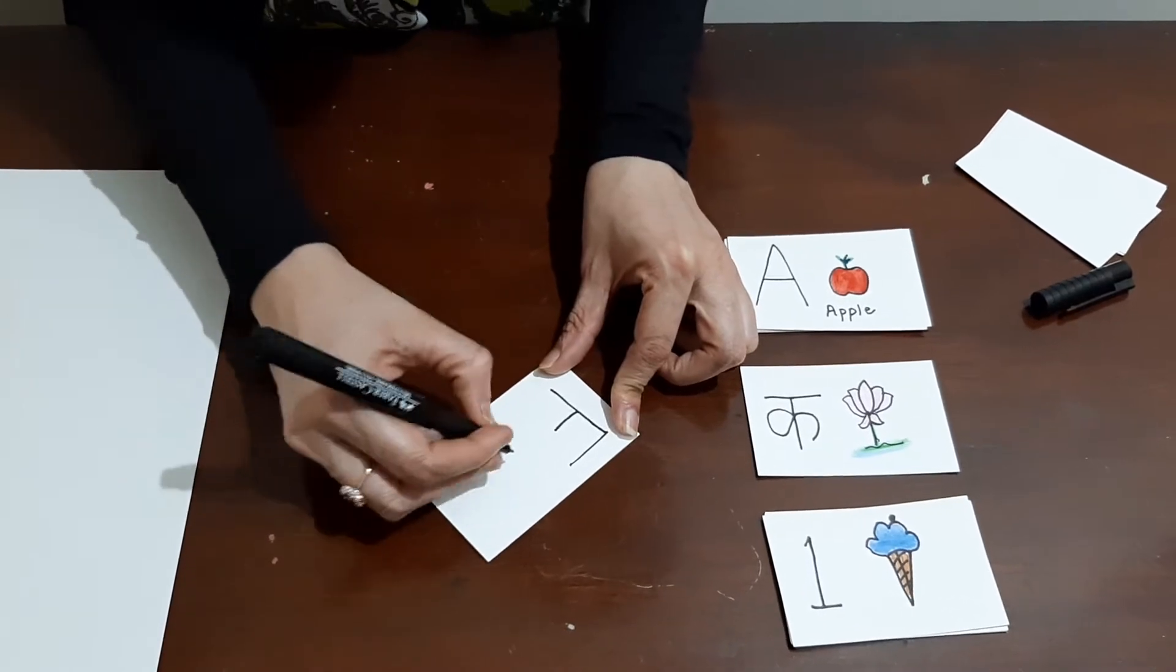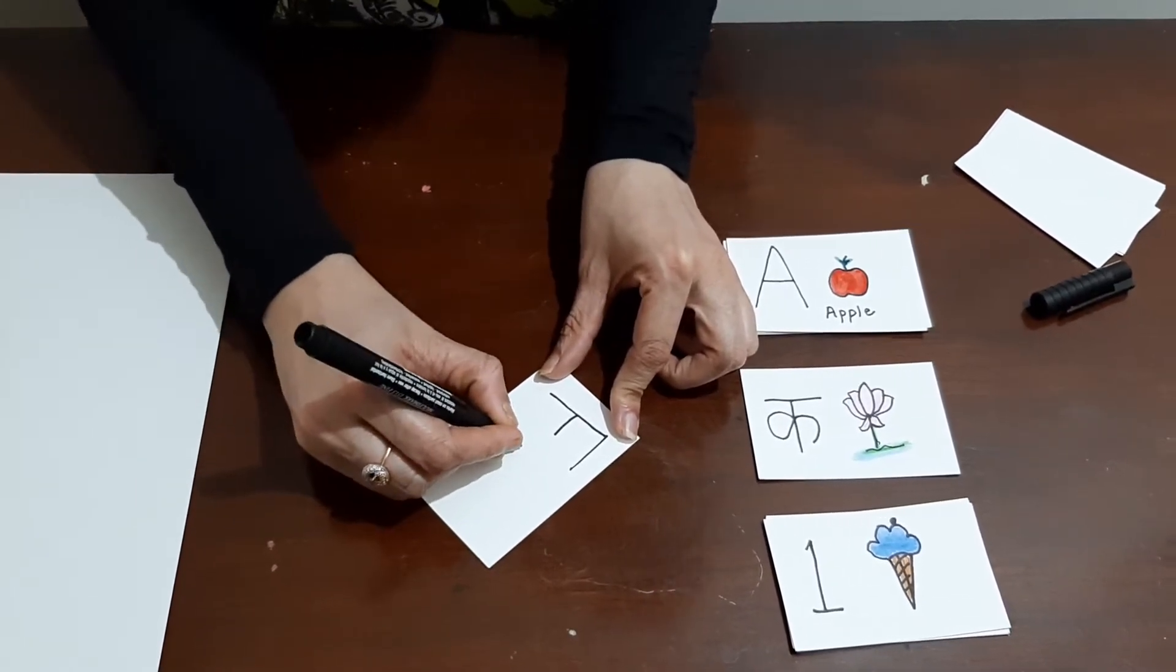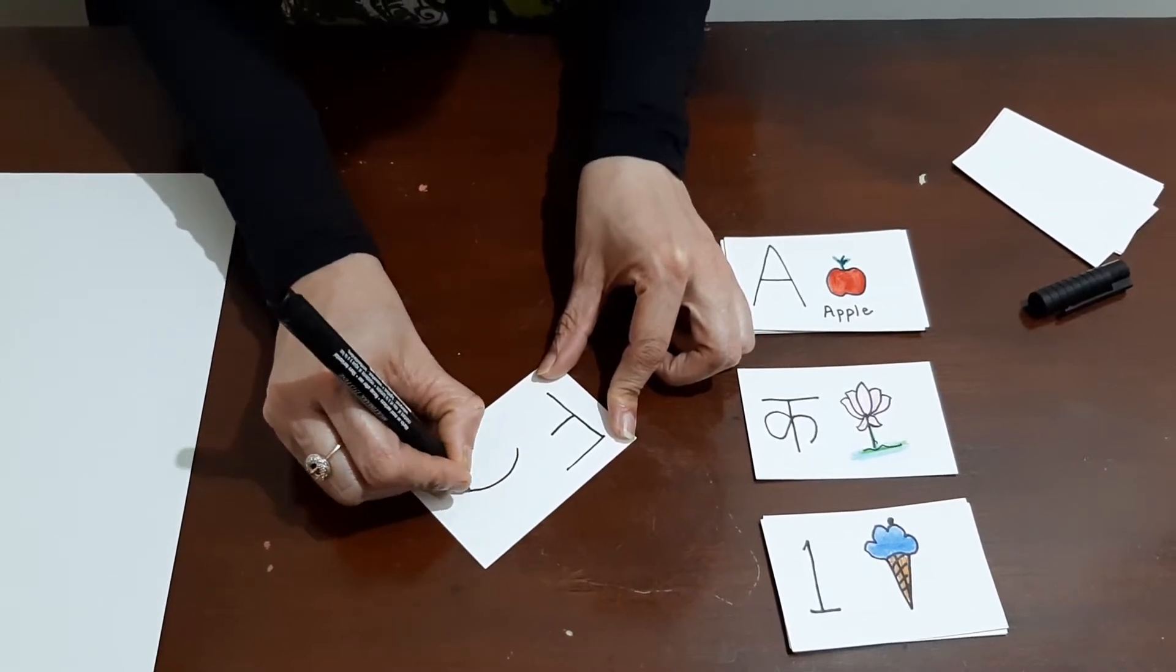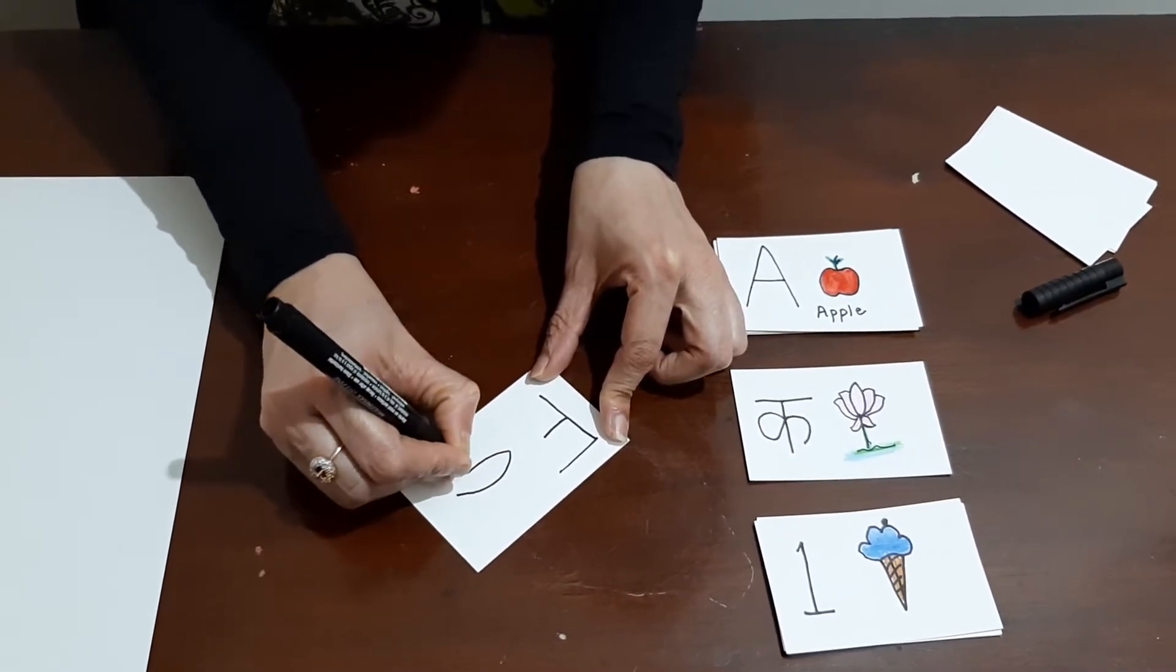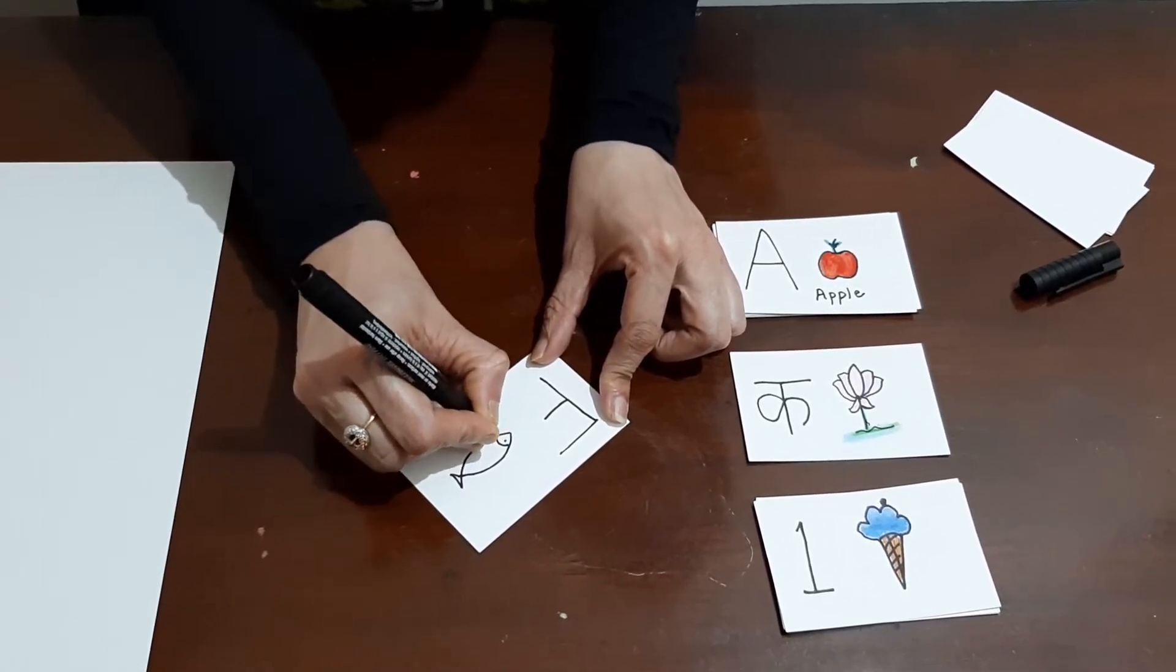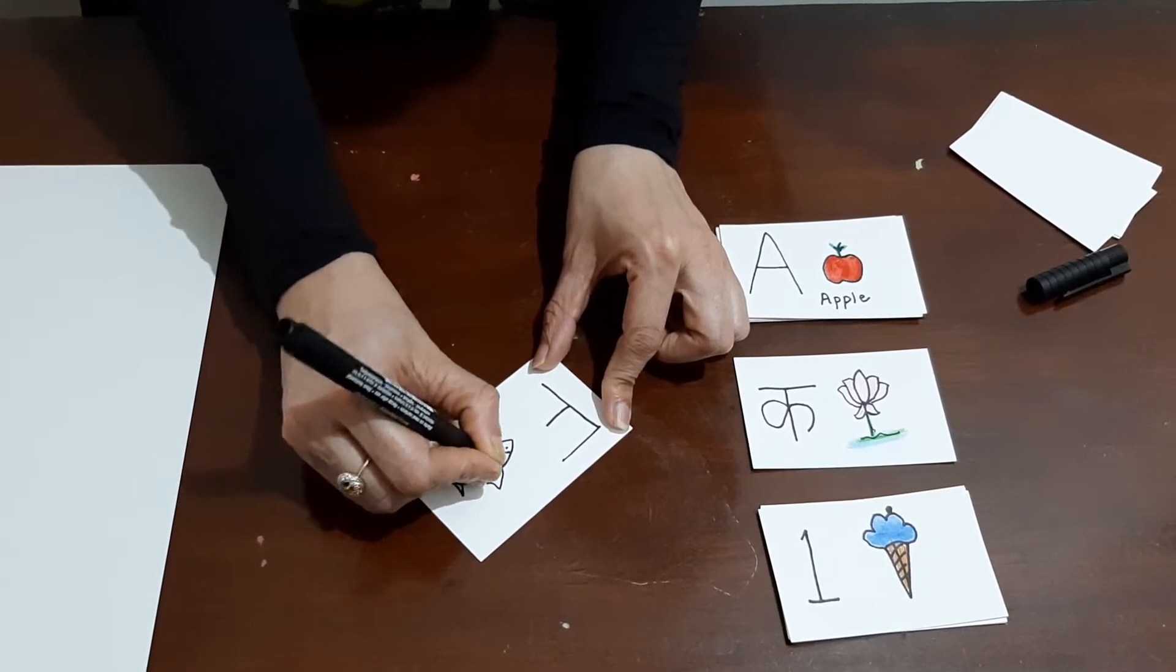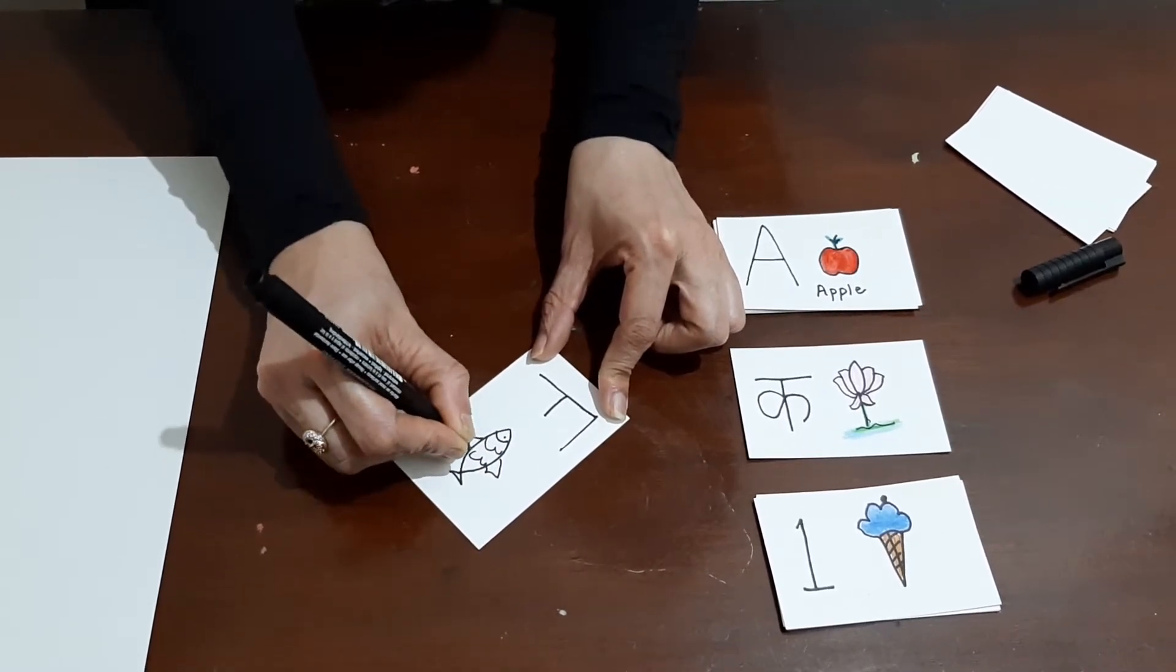Make any drawing with F. You can make a flower, a fish. I am drawing a fish. Like this.